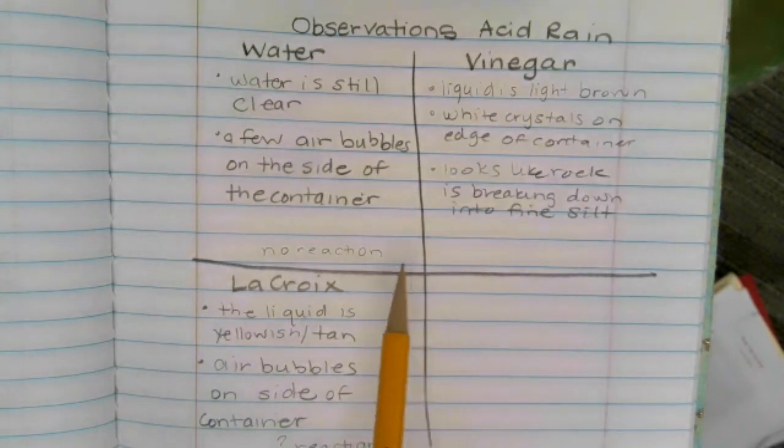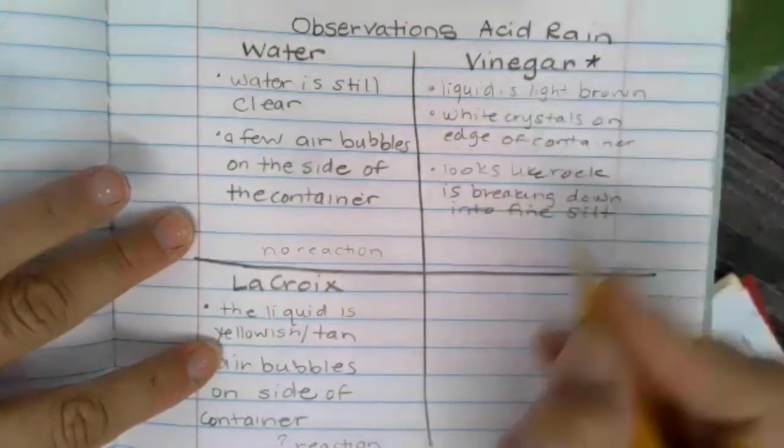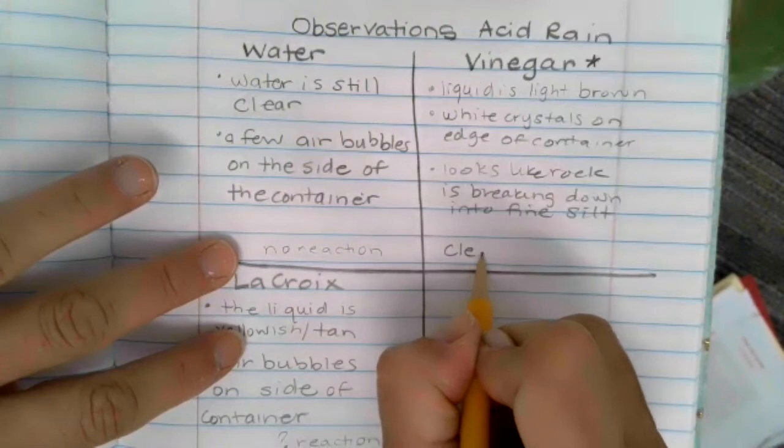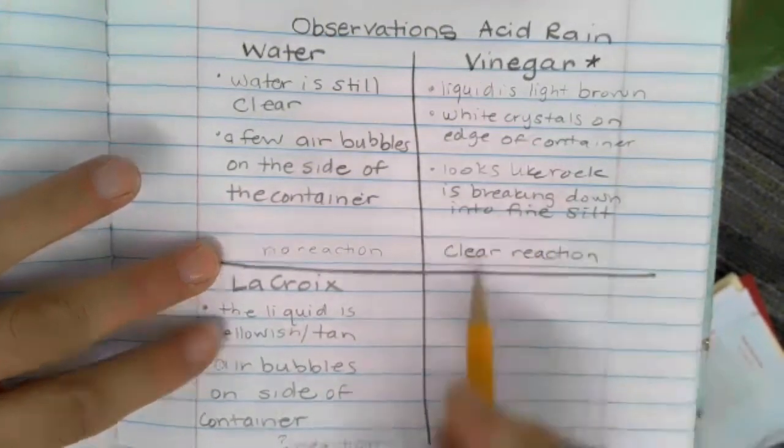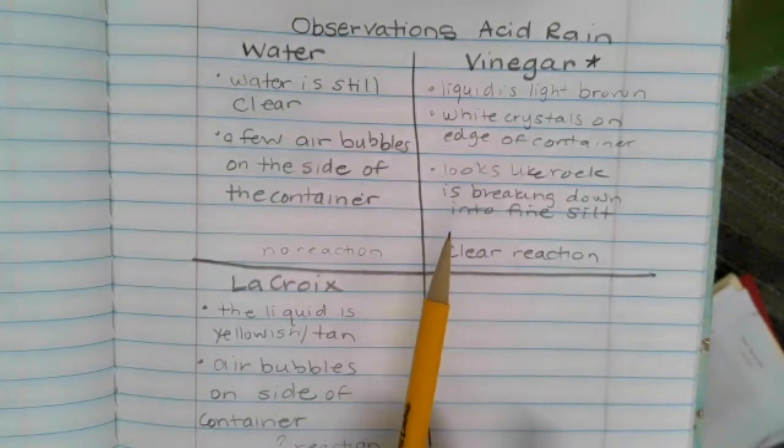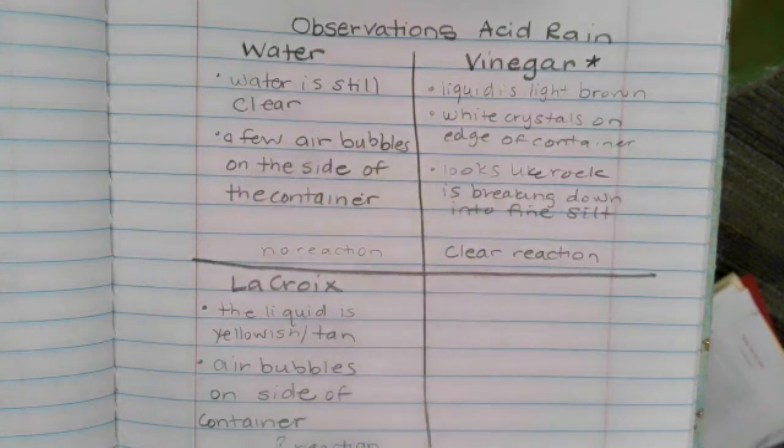However, vinegar. Put a star next to vinegar. This shows a clear reaction. Because the rock looked like it was breaking down and the fact that something else was created, these white crystals that were not there before, we know that a chemical reaction has taken place.